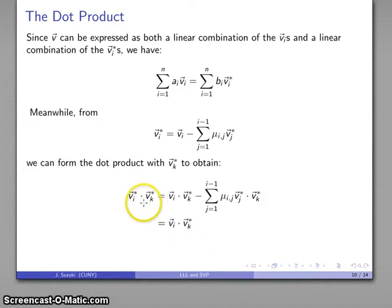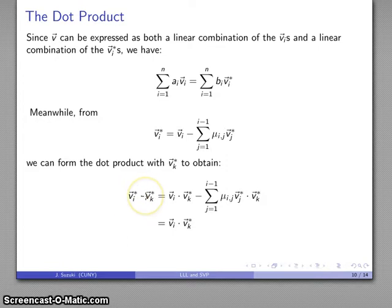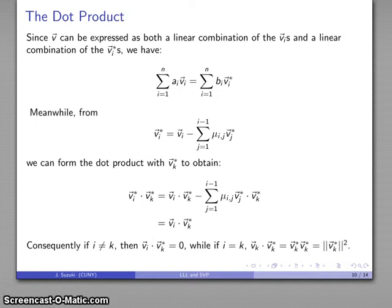Most of those dot products are going to be zero because the Gram-Schmidt basis vectors are orthogonal, which means most of these products are also zero. The only time we don't get a zero value is when i and k are the same number. So if i equals k, then v_k · v_k* equals v_k* · v_k*, which is the magnitude squared of v_k*.